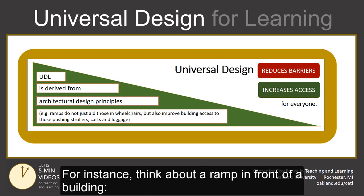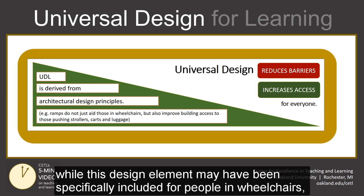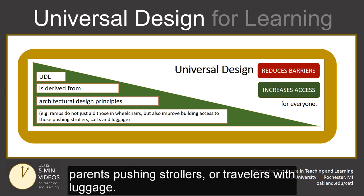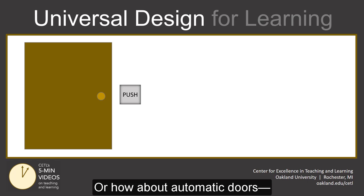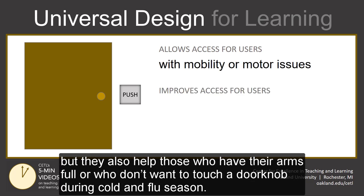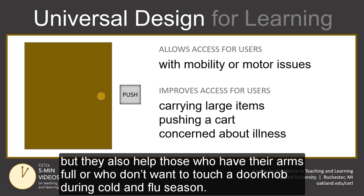For instance, think about a ramp in front of a building. While this design element may have been specifically included for people in wheelchairs, it's also really helpful for people who have a hard time with stairs, parents pushing strollers, or travelers with luggage. Or how about automatic doors? These may be designed for people with mobility or motor issues, but they also help those who have their arms full or who don't want to touch a doorknob during cold and flu season.